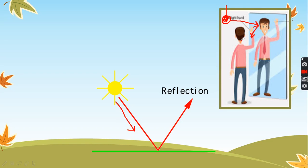Imagine if you are in a dark room where there is no light — can you see your image in the mirror? You cannot see yourself in the mirror because there is no light. If there is no light, there is no light reflection, so you will not be able to see yourself in the mirror.